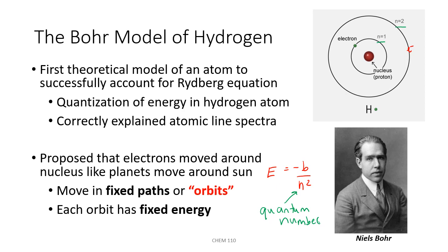This model led Bohr to an equation describing the energy of electrons in the atom: E = −B/n², where n is a quantum number representing the energy level. The constant B has a value of 2.18 × 10⁻¹⁸ joules. Because of the negative sign, the lowest — most negative — energy value occurs when n equals 1, corresponding to the first orbit. The lowest energy state of an atom is its most stable one; this is what we call the ground state.